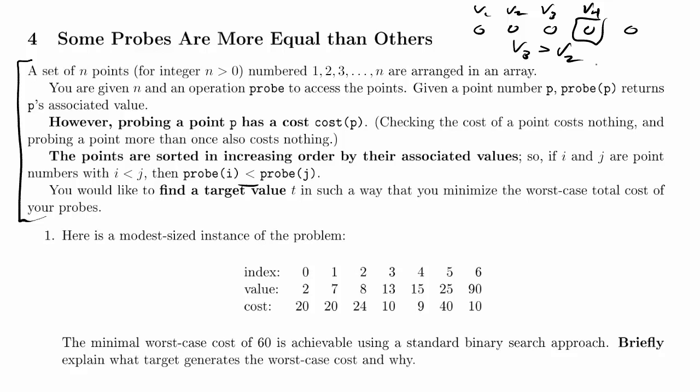You would like to find a target value T in such a way that you minimize the worst-case total cost of your probes. So we're searching for a particular value. In some sense, this is searching for a particular value in a sorted array. We could probe all of these points, and then we could just use binary search to find the value that we're looking for.